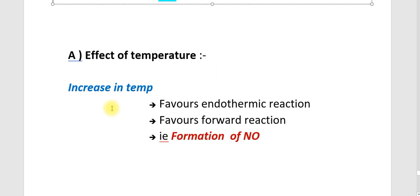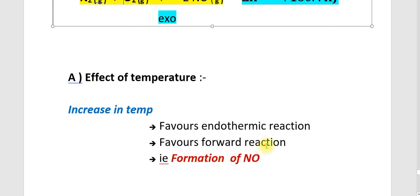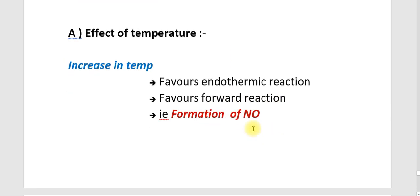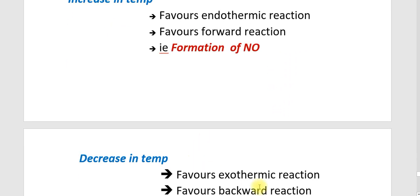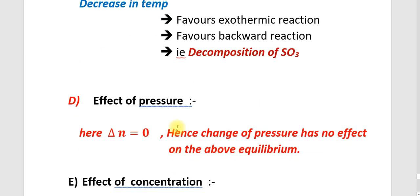Effect of temperature: an increase in temperature favours the endothermic reaction. Here, the endothermic reaction is the forward reaction, so it favours the formation of NO. A decrease in temperature favours the exothermic backward reaction, that is decomposition of NO. The delta n equals zero, meaning the number of moles of products minus reactants equals zero; hence the change of pressure has no effect on this equilibrium.